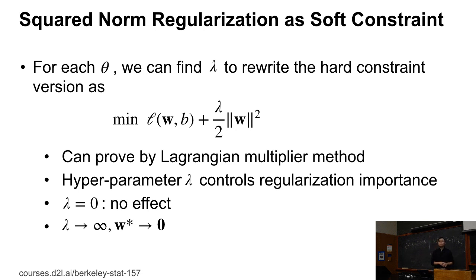So λ here is a hyperparameter. If we choose λ = 0, there will have no effect on the model capacity. If we choose a larger one, for example, if we choose λ → ∞, then we force all the w to go to zero.